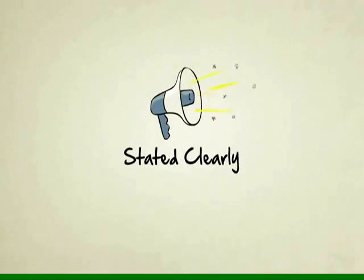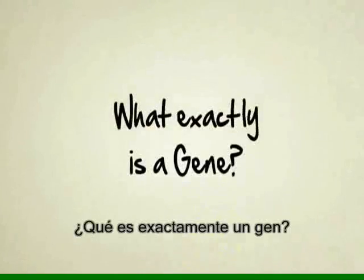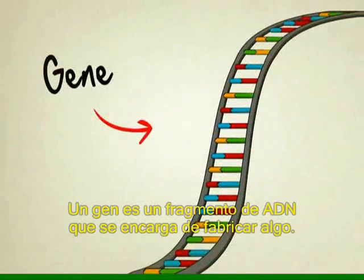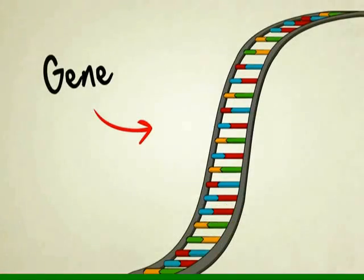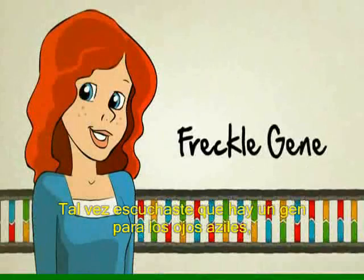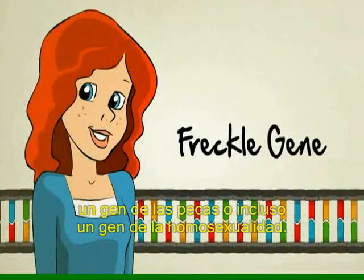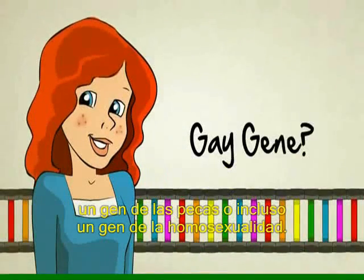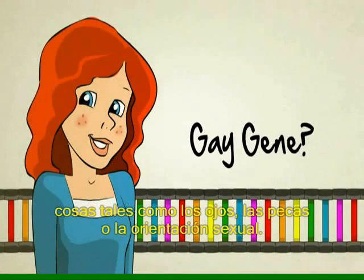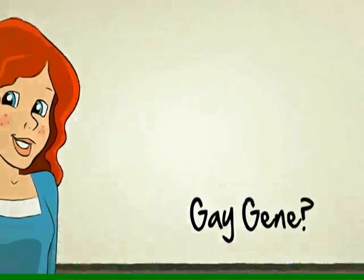Stated Clearly presents: What exactly is a gene? A gene is a special stretch of DNA in charge of building something. You might have heard that there's a blue-eyed gene, a freckle gene, or possibly even a gay gene, but single genes don't literally make things like eyeballs or freckles or sexual orientations.